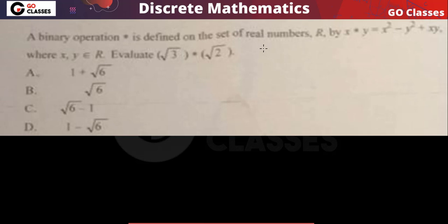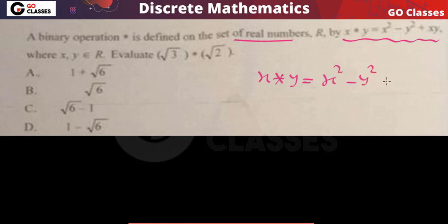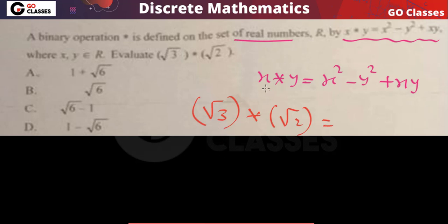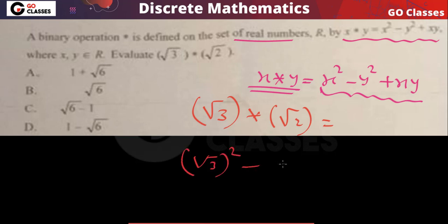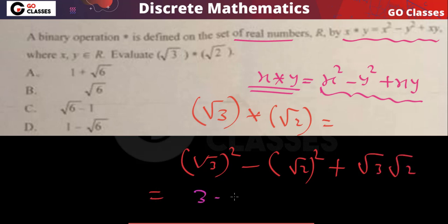Next: a binary operation is defined on the set of real numbers as x★y = x² − y² + xy. Find √3 ★ √2. Substituting x = √3, y = √2: x★y = (√3)² − (√2)² + (√3)(√2) = 3 − 2 + √6 = 1 + √6. So the answer is option A.